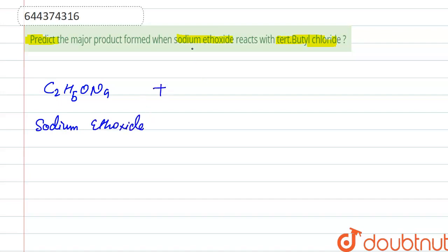When it reacts with tertiary butyl chloride, that is C with CH3, CH3, CH3, and Cl, then what is the product formed? We have to find it.